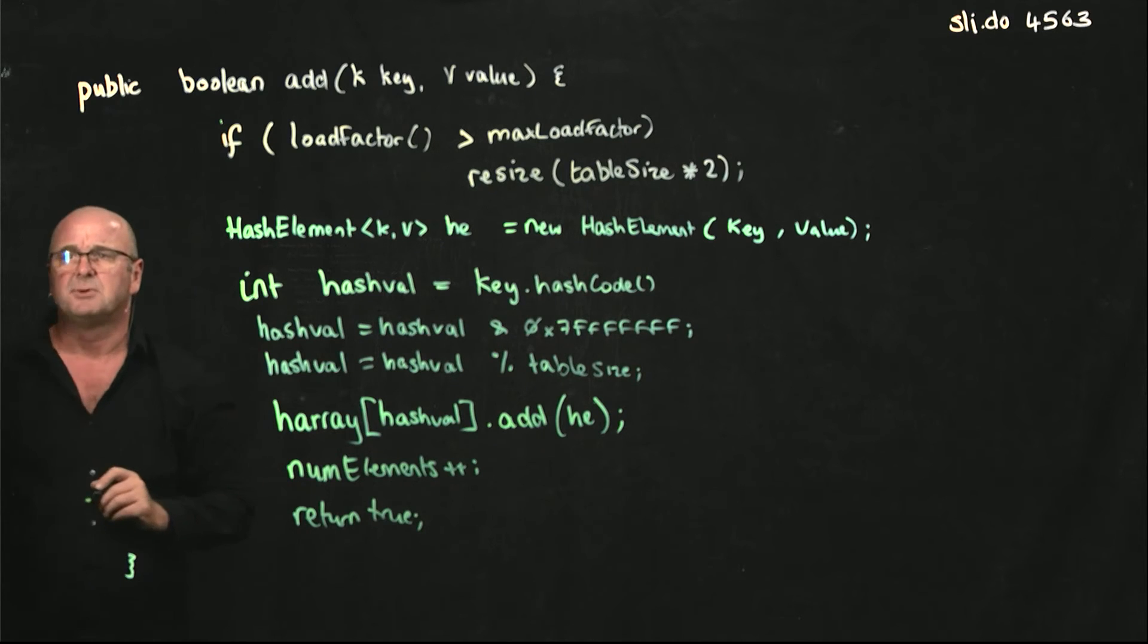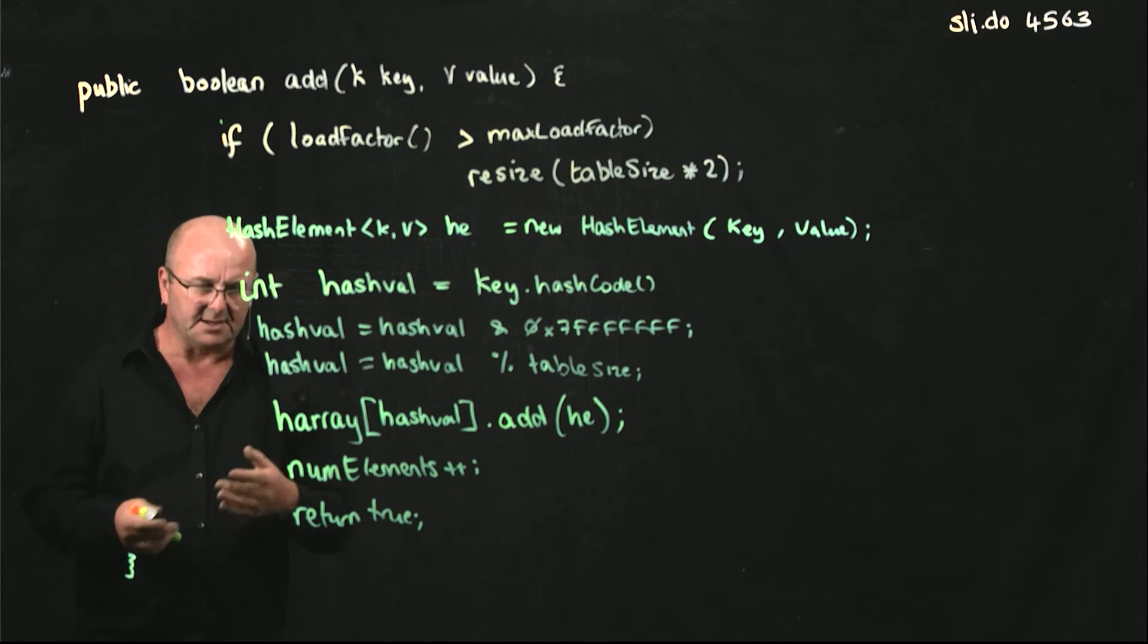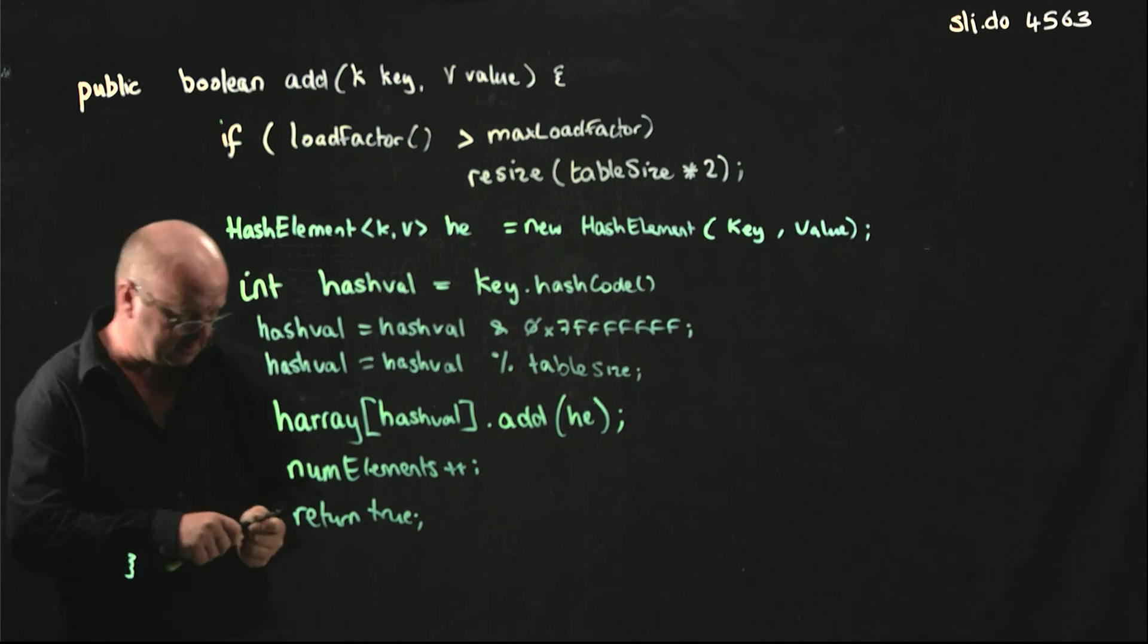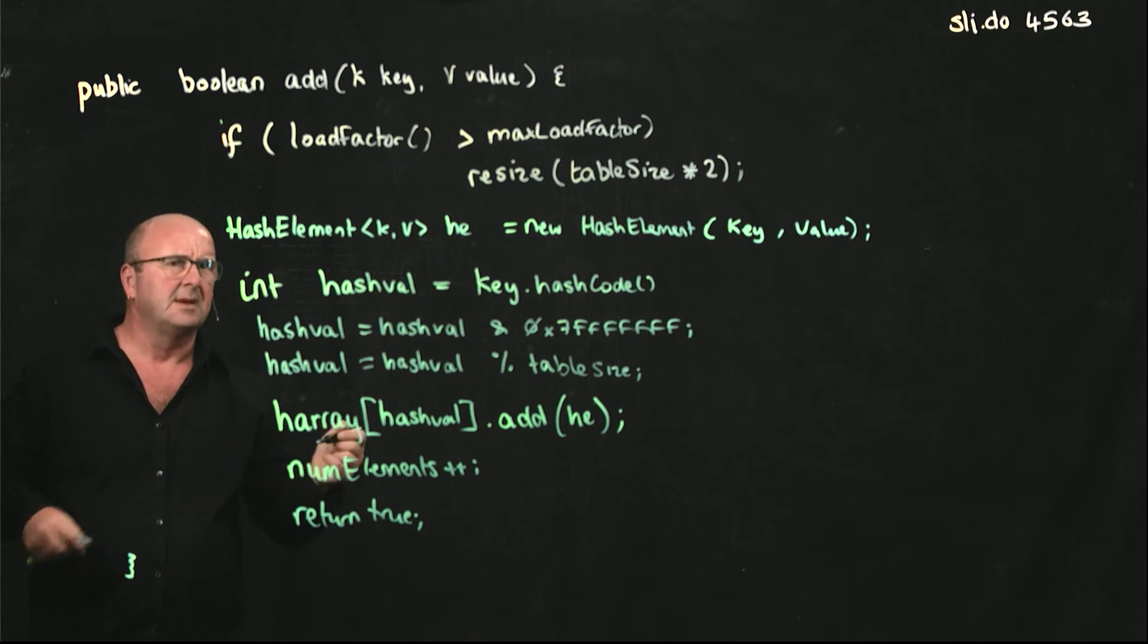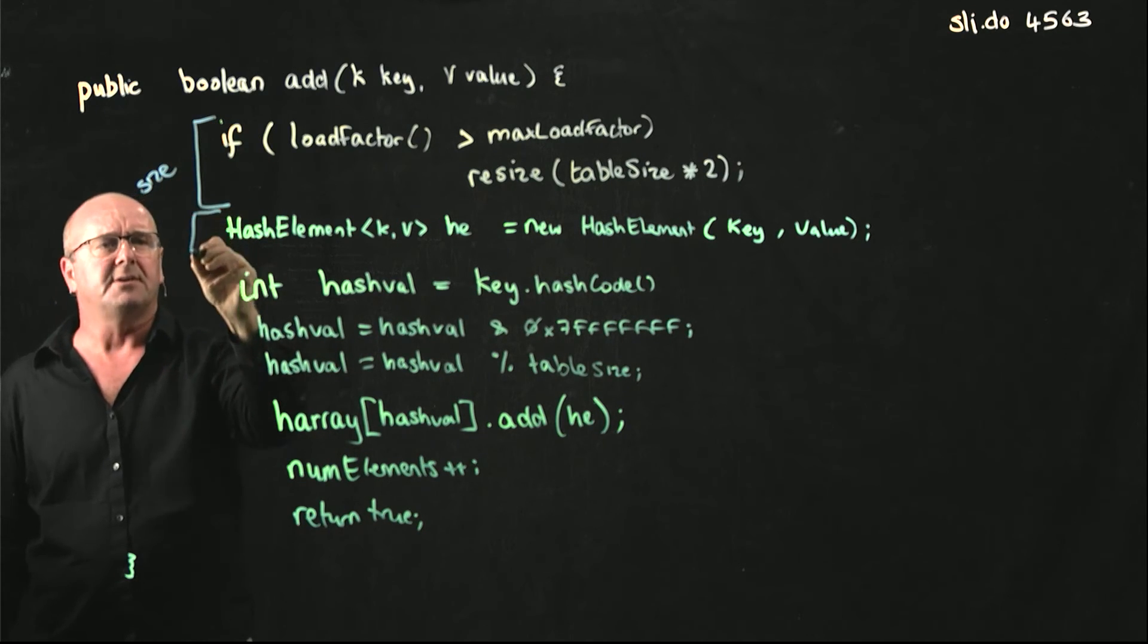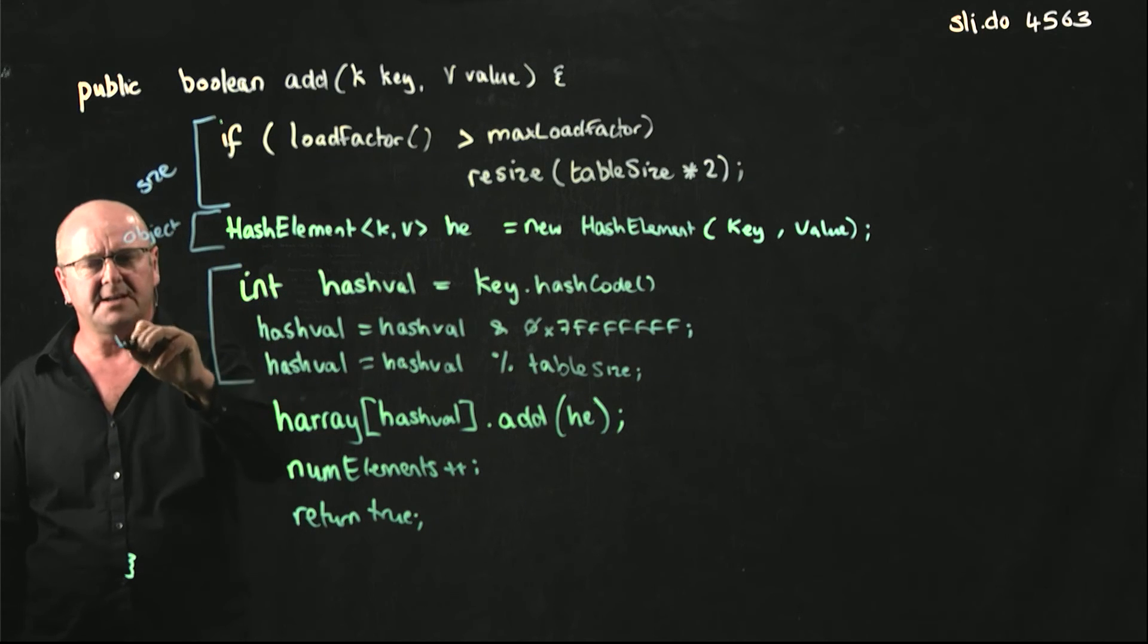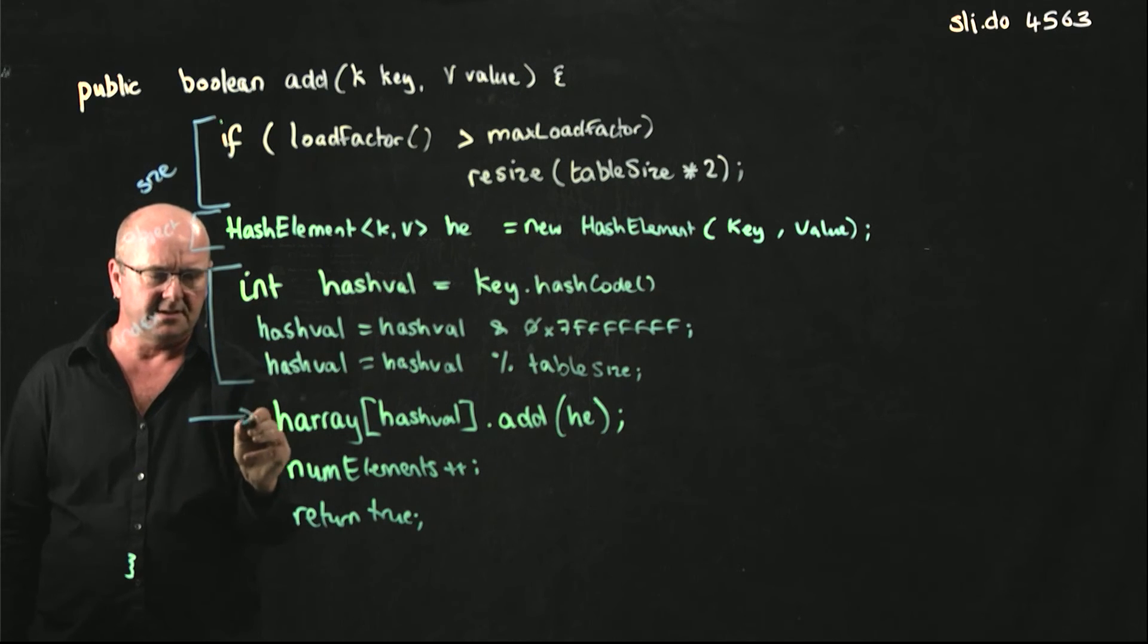This method returns Boolean, but there's no reason why we couldn't return a void, or return the key, or return the number of elements, or anything else. So we've got resizing. We've got creating a new object to add. We've got finding the index to add it to. And we've got our linked list.